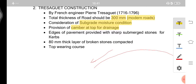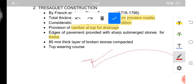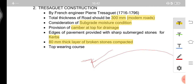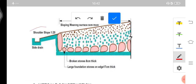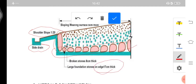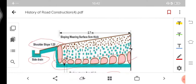The edges of pavements were kept with sharp stones known as curbs. An 80 mm thick layer of broken stones was compacted, and a top wearing coat was applied. As seen in the diagram, there is a shoulder slope of 1 in 20, side drainage was provided, broken stones 8 cm thick at the bottom, large foundation stones at the edge 17 cm thick, and a wearing surface 5 cm thick.